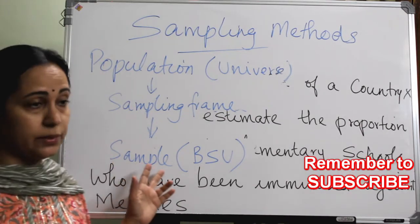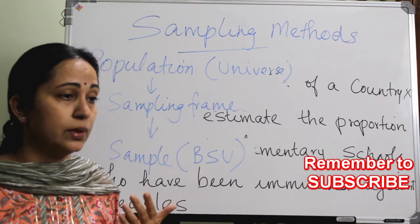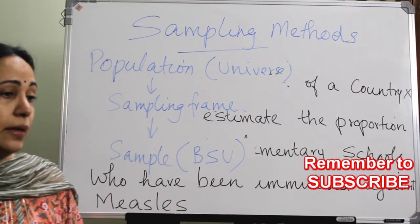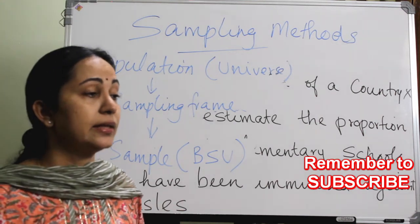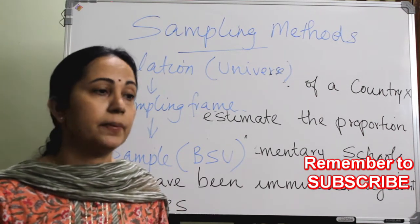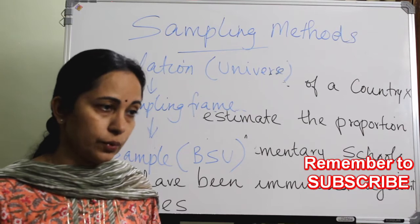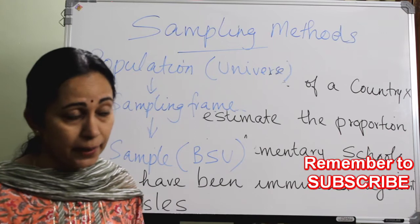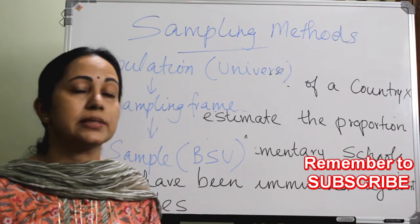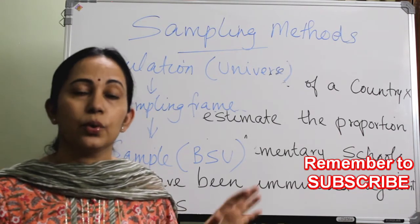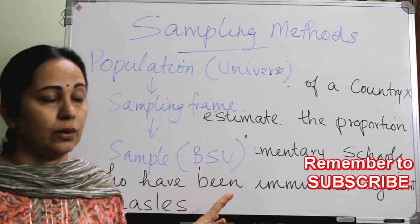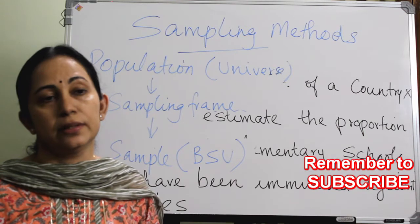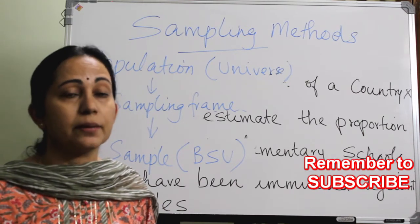The main objectives of sampling are: first, we can reduce the cost of the study; second, time can be saved; and third, if many people are deputed for data collection, there can be a chance of inter-observer variability bias and sampling error. By doing correct sampling of the population, all these drawbacks can be corrected.